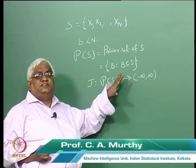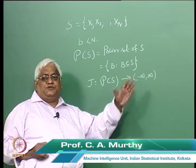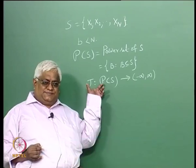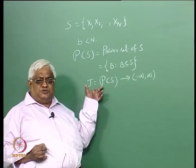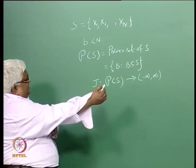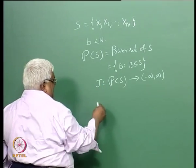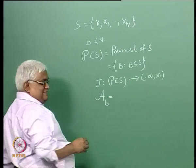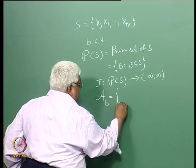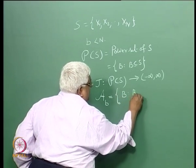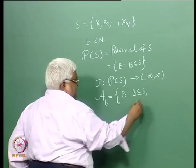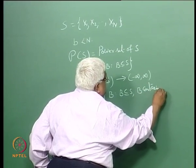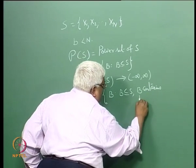I am writing it in a very general form: minus infinity to plus infinity. And J is to be optimized. The meaning of J is to be optimized is: let us look at the set of all B where B is a subset of S and B contains small b elements.